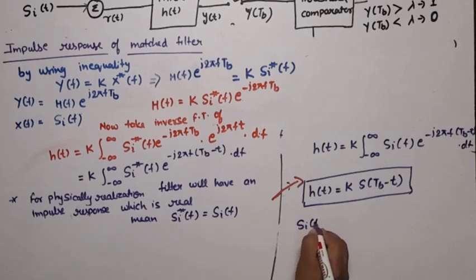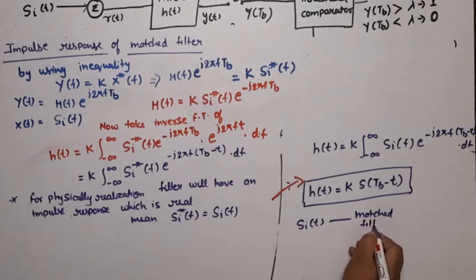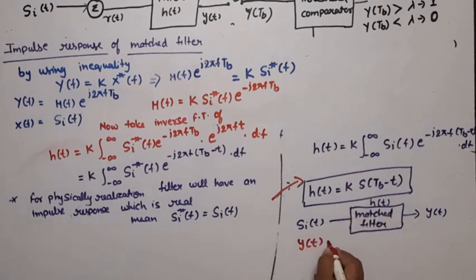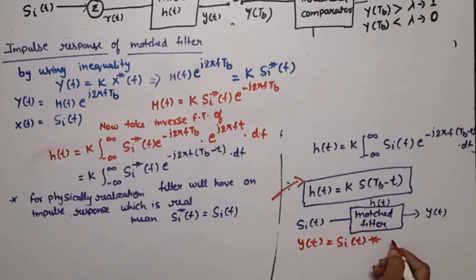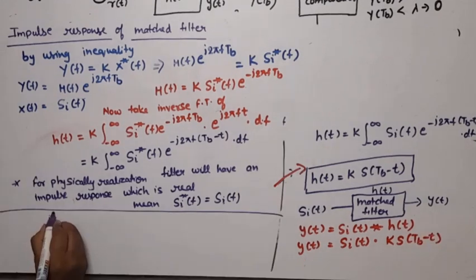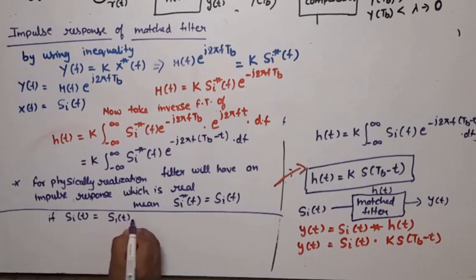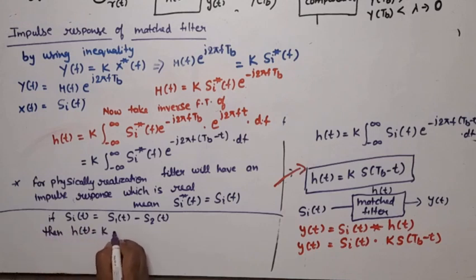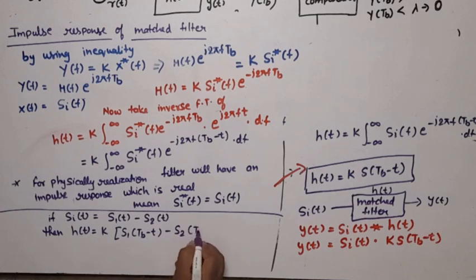For physical realization, the impulse response must be real, so S_i*(f) = S_i(f). If we apply s_i(t) to the matched filter, the output y(t) = s_i(t) * h(t) = s_i(t) * K · s_i(T_b − t). If s_i(t) is the difference of two signals, s_1(t) − s_2(t), then h(t) = K · [s_1(T_b − t) − s_2(T_b − t)].